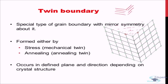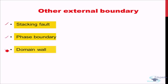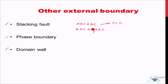Other two-dimensional defects include stacking fault, phase boundary, and domain wall. A stacking fault occurs when there is a fault in the stacking sequence — for example, in an FCC crystal the normal sequence is ABCABC, but if it becomes ABCABABC, the C layer is absent and there is a change in stacking sequence. This type of defect due to a change in stacking sequence is known as a stacking fault.